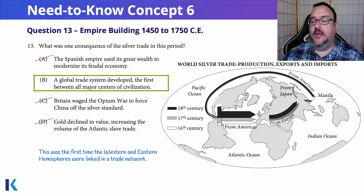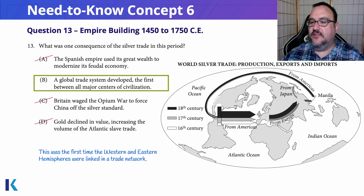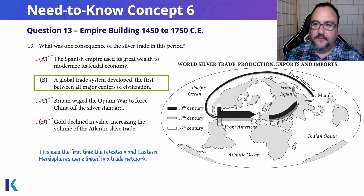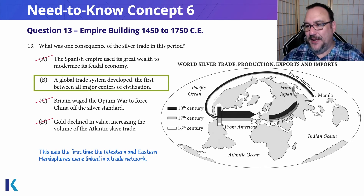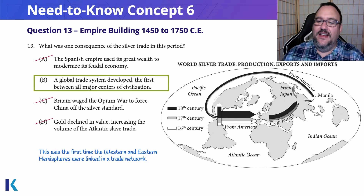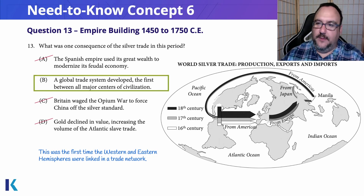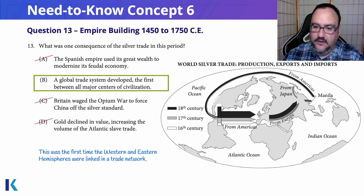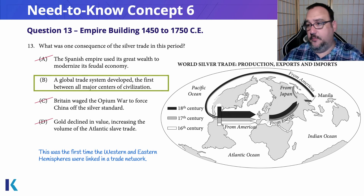It's the first time that the western and eastern hemispheres are linked in a trade network. You can see on the map that circle basically covers every single one of our eight civilizations — it goes through all of those groups. It's the first time that trade network opened up, and it's something that will continue to influence things from this point on.